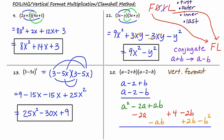With everything lined up vertically, I just add each column downward. We get a squared minus 4a. The positive ab and negative ab cancel. Then we have plus 4. The negative 2b and positive 2b cancel. So in the end we have a squared minus 4a plus 4 minus b squared.